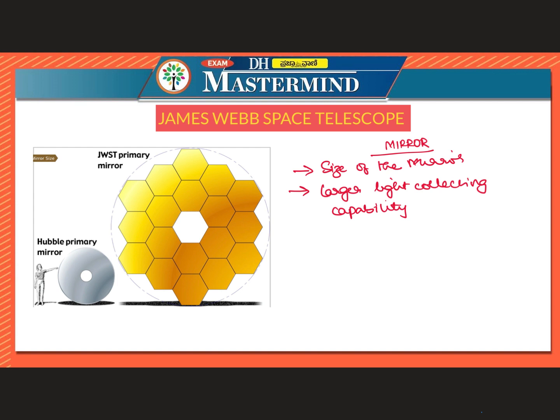Because of its larger light-collecting capability and more information gathered, James Webb Space Telescope can peer farther back into time. This is the major reason why a larger mirror has been employed in JWST.